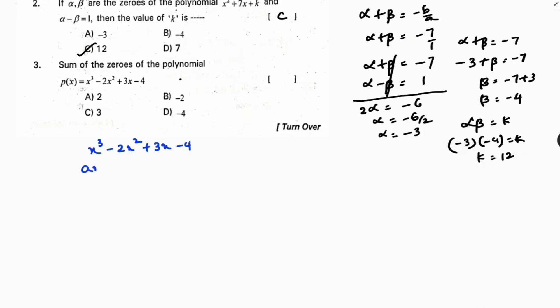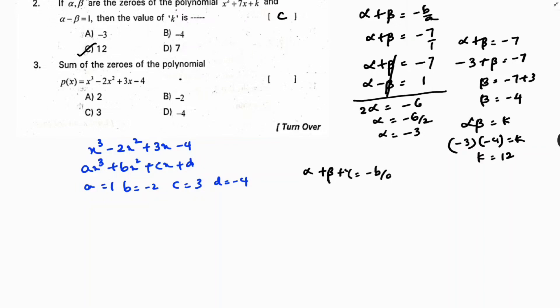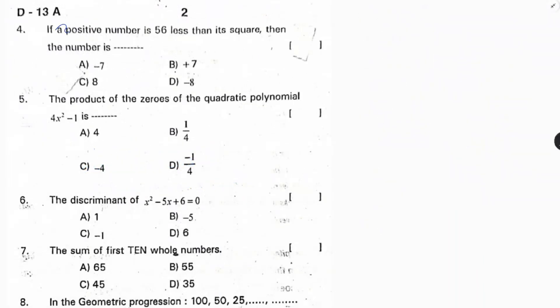Next question: find the sum of zeros of the cubic polynomial x³ − 2x² + 3x − 4. Comparing with ax³ + bx² + cx + d: a = 1, b = −2, c = 3, d = −4. The sum of zeros (alpha + beta + gamma) = −b/a = −(−2)/1 = 2. The correct option is A.